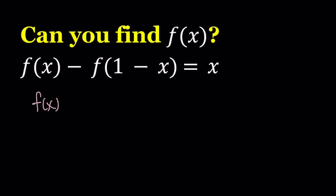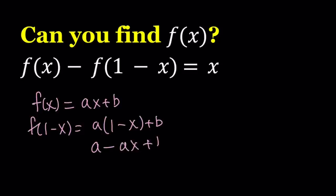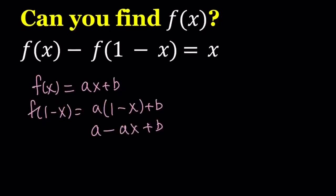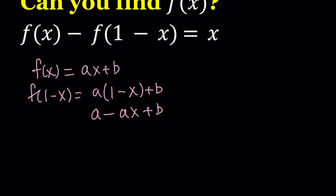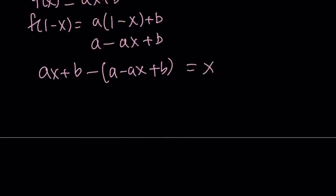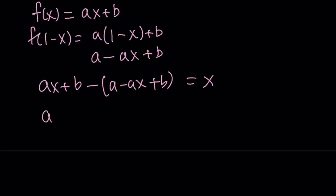So what happens if f of x is equal to ax plus b? Then f of 1 minus x is going to be a times 1 minus x plus b. If you expand that, you're going to get a minus ax plus b. Now, I'm supposed to subtract those and set the result equal to x. So ax plus b minus a minus ax minus b, the b cancels out.